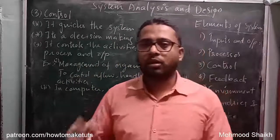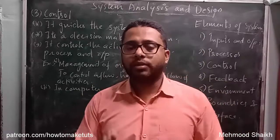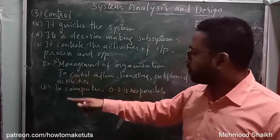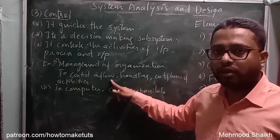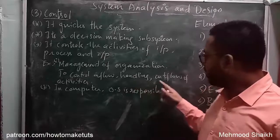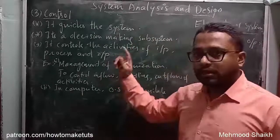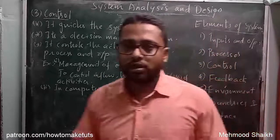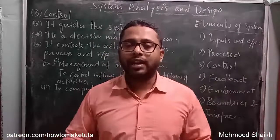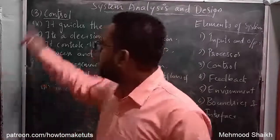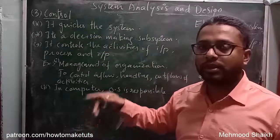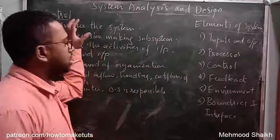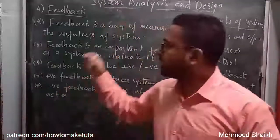To understand control with an example: in an organization, management is responsible for controlling the entire activities — controlling the inflow, handling each department, and managing outflow. Similarly, in a computer system, the operating system is considered the controlling unit, because it is responsible for maintaining and handling each and every activity of the computer. The control element in a system guides and makes decisions for all system activities.